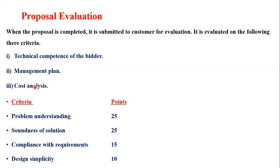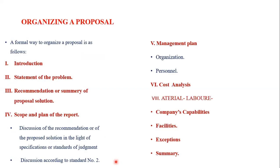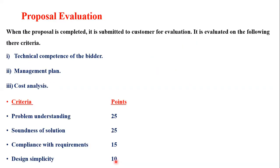The proposal scoring breakdown is as follows: understanding the problem is 25%, soundness of the solution is 25%, compliance with the requirements is 15%, and design — including simplicity — is also factored in. Writing and designing completion accounts for 15% of the evaluation score. These percentage weightings guide both the writer and the evaluator in assessing a proposal's effectiveness.